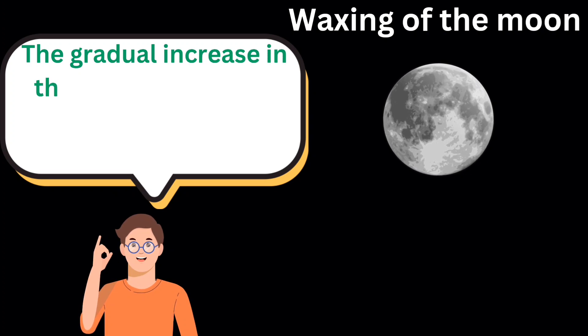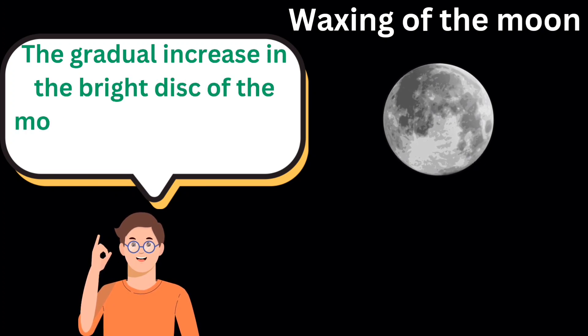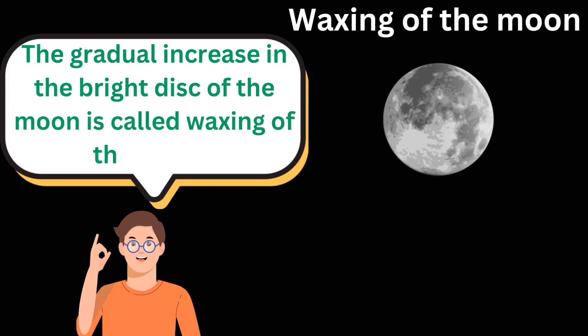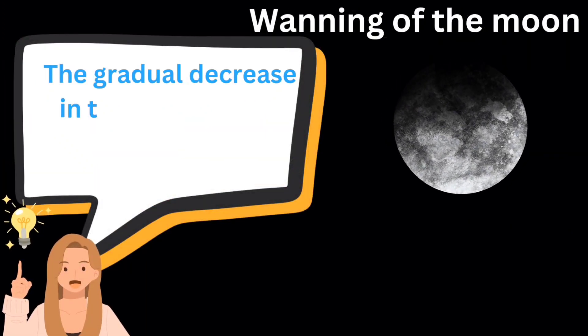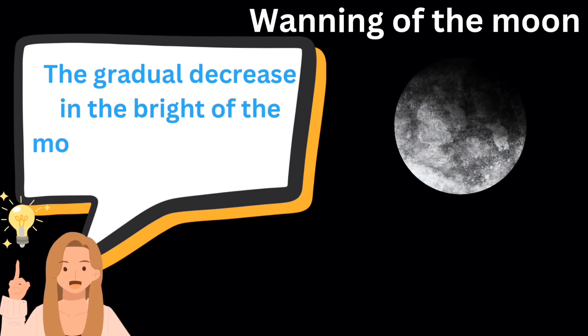The gradual increase in the bright disk of the moon is called the waxing of the moon, and the gradual decrease in the bright disk of the moon is called waning of the moon.